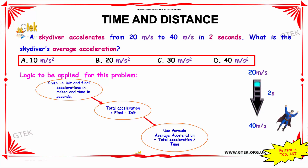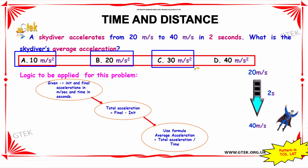The options given are: option A is 10 meters per second squared, option B is 20 meters per second squared, option C is 30 meters per second squared, and option D is 40 meters per second squared.